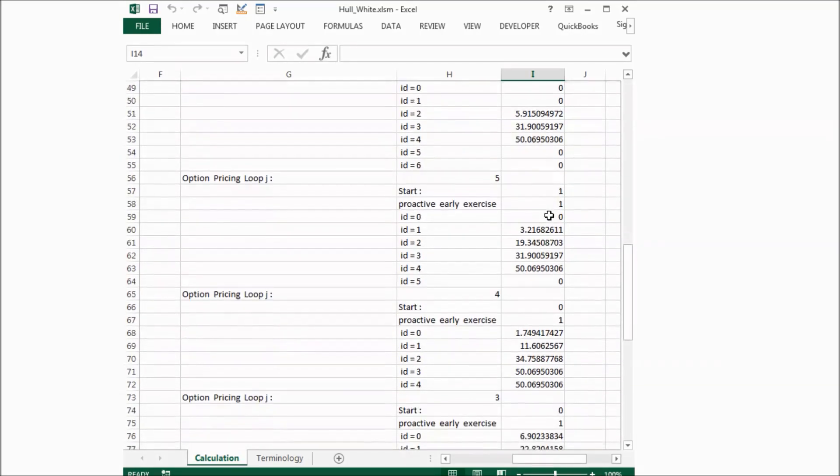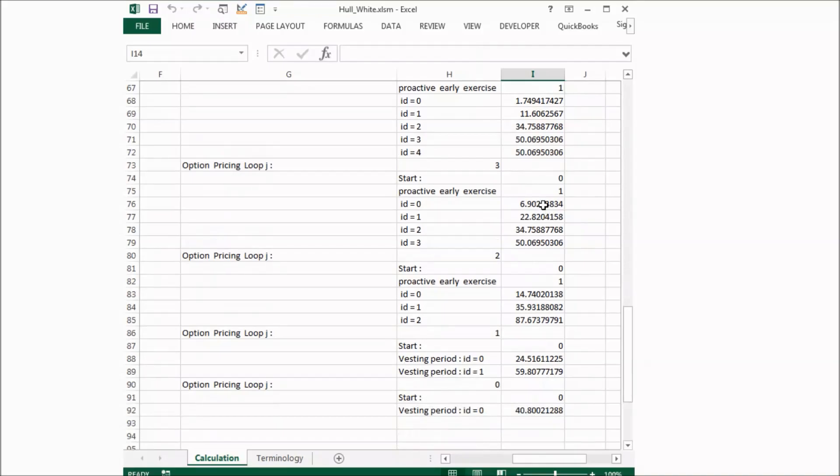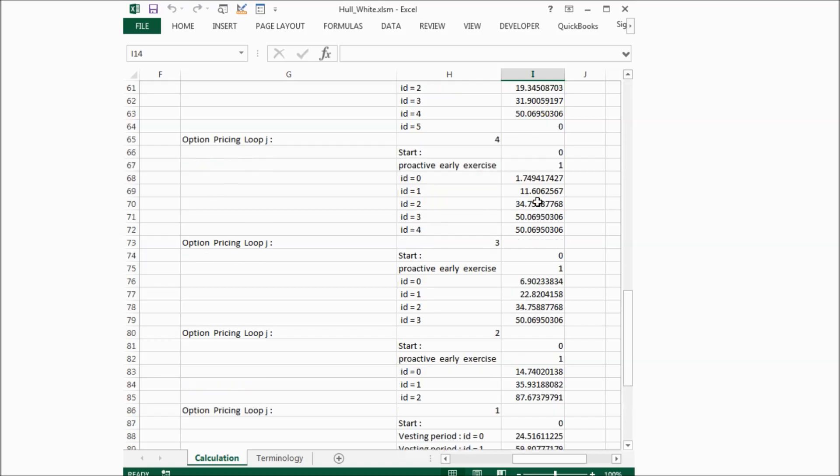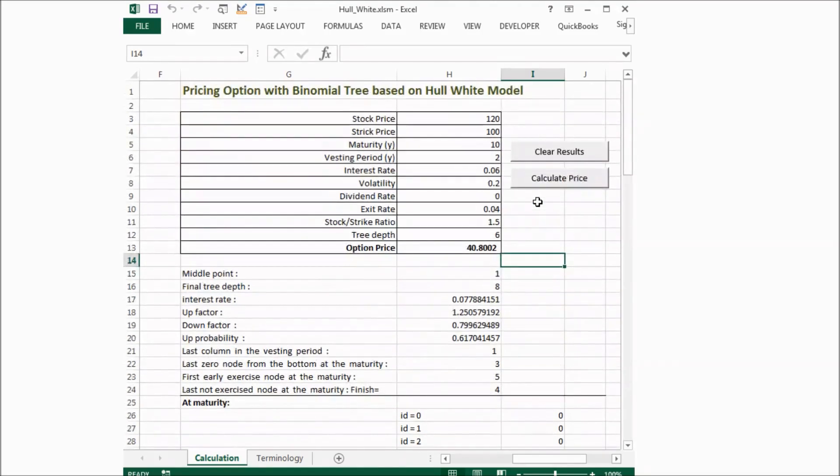you can see it calculates the value of the previous step's nodes. And the final result is 40. Of course, it's larger than the previous example, because the stock price is higher than before.